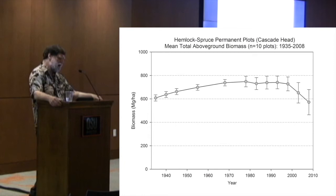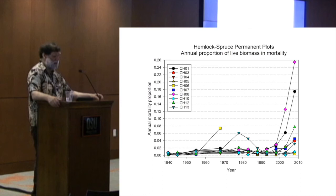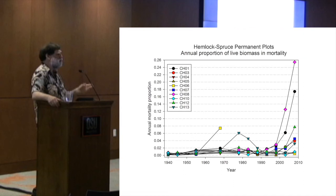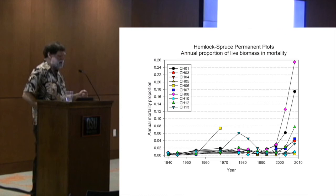A lot of this is driven by mortality. This graph shows annual mortality expressed as a proportion of the biomass that exists. Something like the blow-down in plot six appears to show low mortality, but that's because there was a long period between measurements. We can see there's been a big spike in mortality in some plots while others are hovering around one percent. Understanding mortality is a focus of current research — it's extremely heterogeneous.